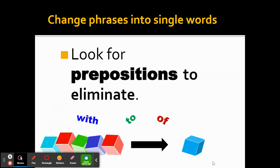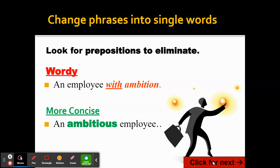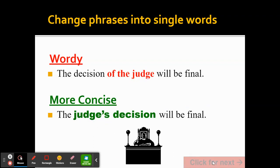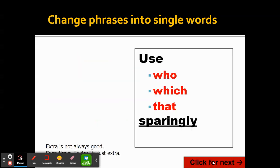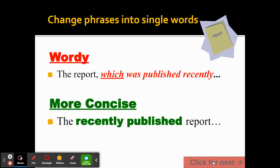Too many words can be ugly. One of the things you can do is remove prepositional phrases. 'An employee with ambition' is just 'an ambitious employee.' 'The decision of the judge' is just 'the judge's decision.' Use 'who,' 'which,' and 'that' sparingly — extra is not always good, sometimes extra is just extra. 'The report, which was published recently' is more concisely expressed as 'the recently published report.' Think about how you can change phrases into single words.